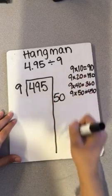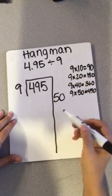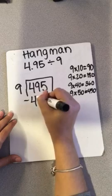So I put my groups over here. So I took out 50 groups, and I subtract 450.